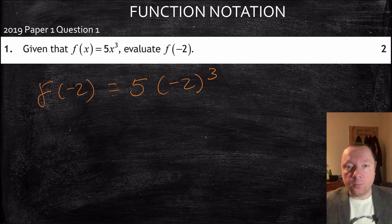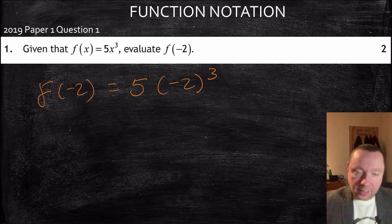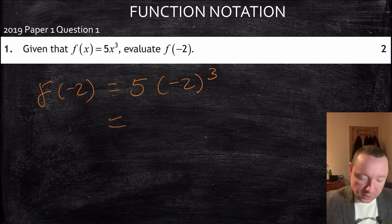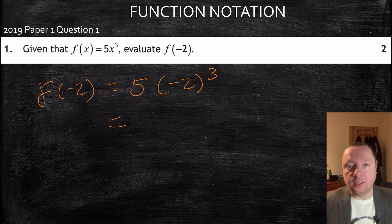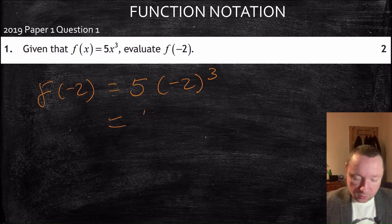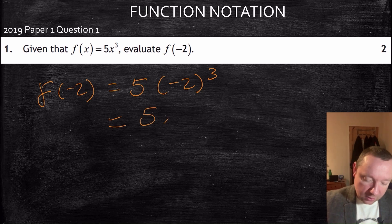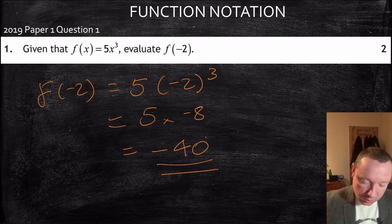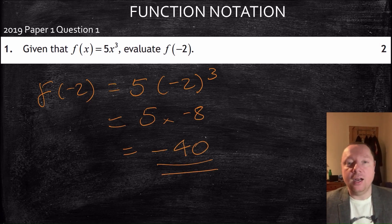Remember, do the cubed bit first, then times by 5. So minus 2 cubed is 2 times 2 is 4, times 2 is 8, so it's minus 8. So it's 5 times minus 8. 5 times 8 is 40, so it's negative 40 as a final answer.